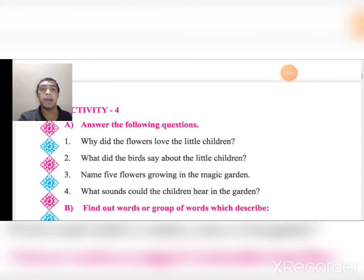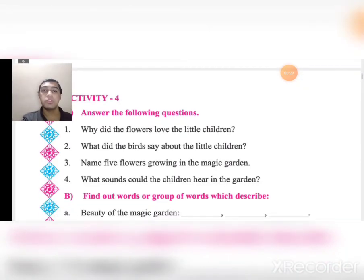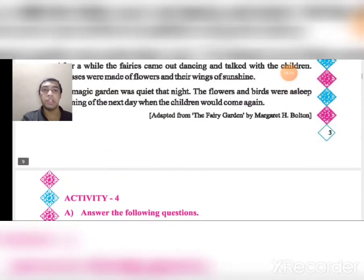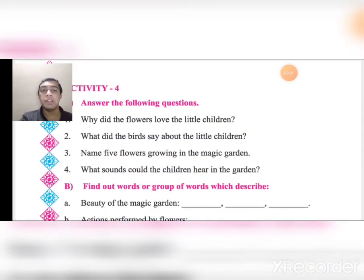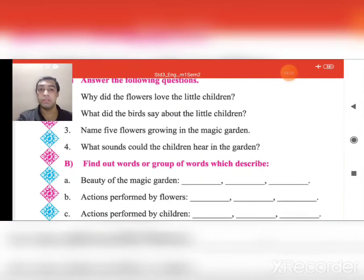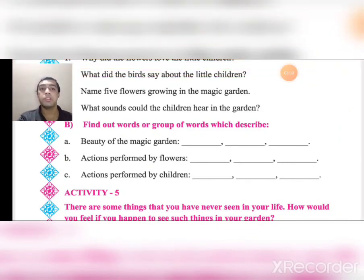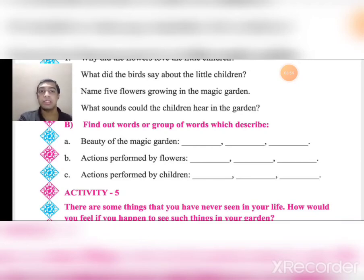Now Activity 4: Answer the following questions. 1) Why did the flowers love the little children? 2) What did the bird say about the little children? 3) Name 5 flowers growing in the magic garden. 4) What sound could the children hear in the garden? We have discussed the story — try to answer those questions yourself. I will give the PDF with answers, but try it yourself first. Also, find words or groups of words which describe: the beauty of the magic garden, actions performed by flowers, and actions performed by children.